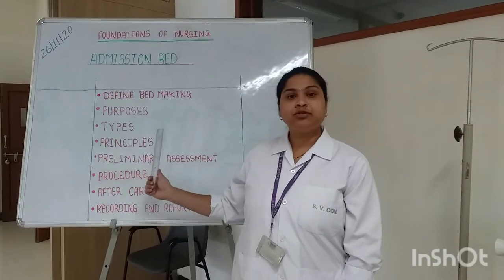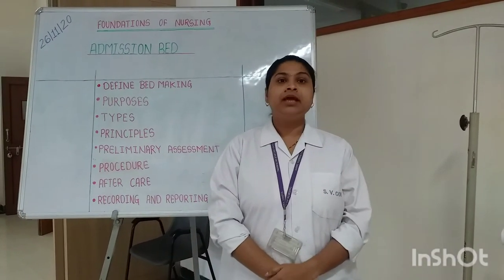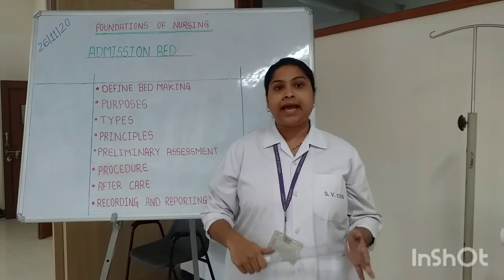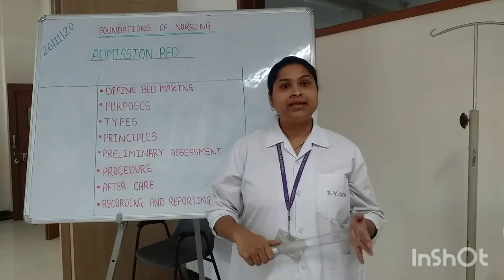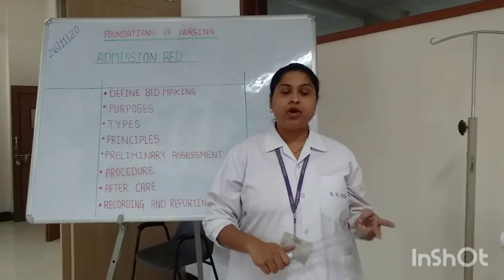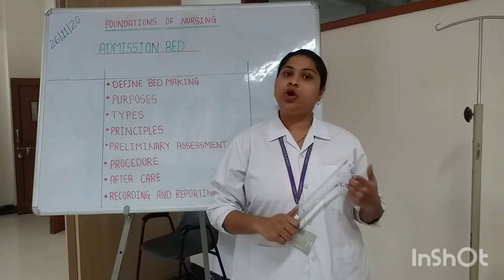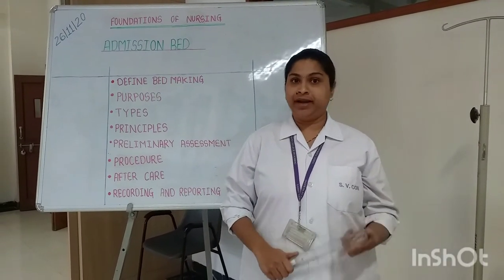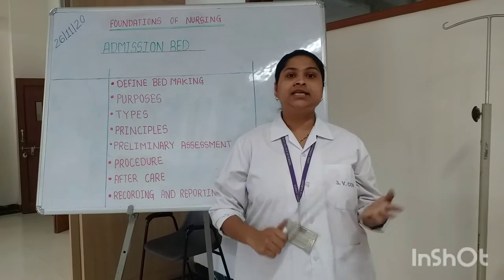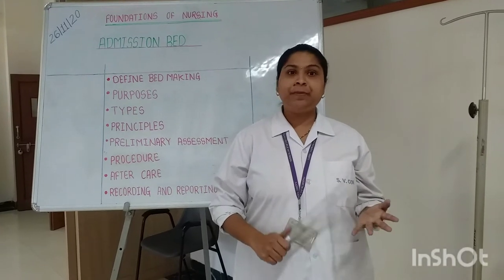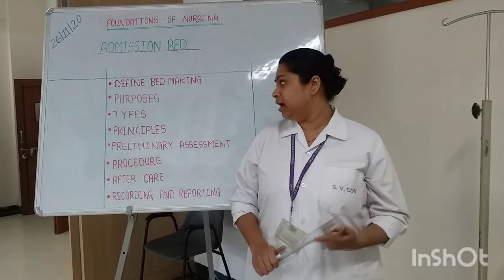There are basically two types of bed making: simple bed and special bed. In the simple bed there are two types — open bed or occupied bed, and closed bed or unoccupied bed. In the special bed, the beds are divided as amputation bed, renal bed, cardiac bed, burn bed, etc.